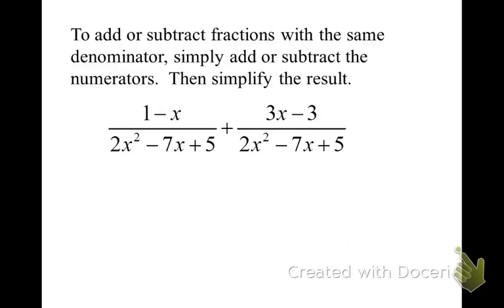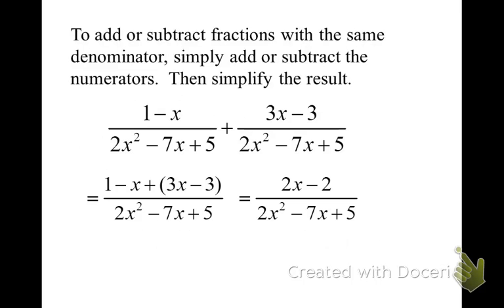In this problem, we're just going to add the numerators. So we have 1 minus x plus 3x minus 3. We're going to combine like terms in those numerators. The negative x plus 3x is 2x, and 1 minus 3 is negative 2. Now that we have added the numerators together,